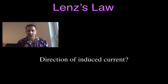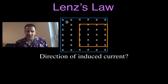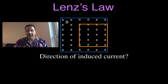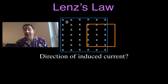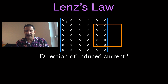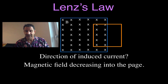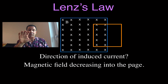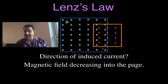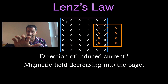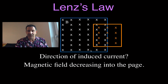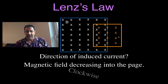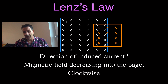Now we'll go through six more examples a bit faster since they're similar. In this case, we move the coil out of the magnetic field — the amount of magnetic field is decreasing, and it's decreasing into the page. If it's decreasing into the page, the coil wants to produce more field into the page. Taking my fingers and pointing them into the page inside the coil, my thumb points in the direction of the induced current, which is flowing in the clockwise direction.